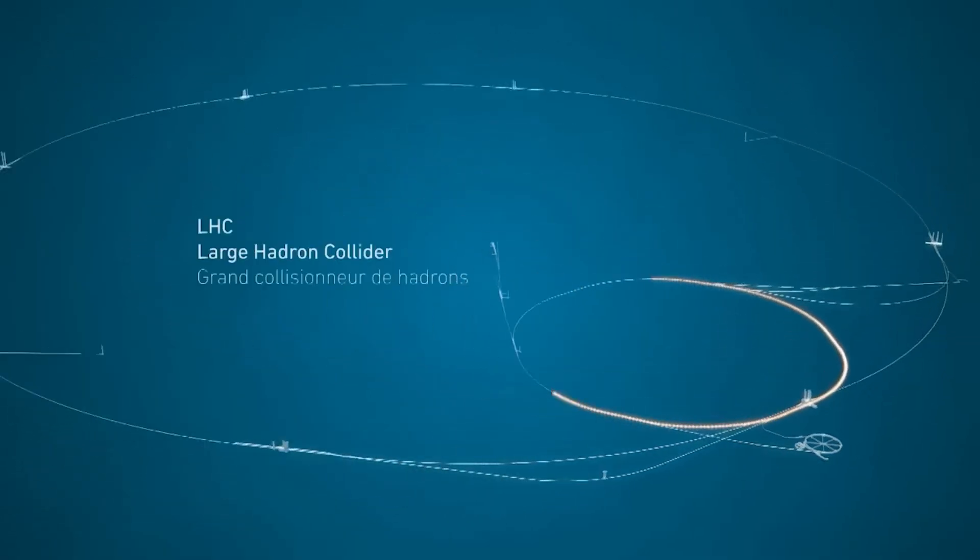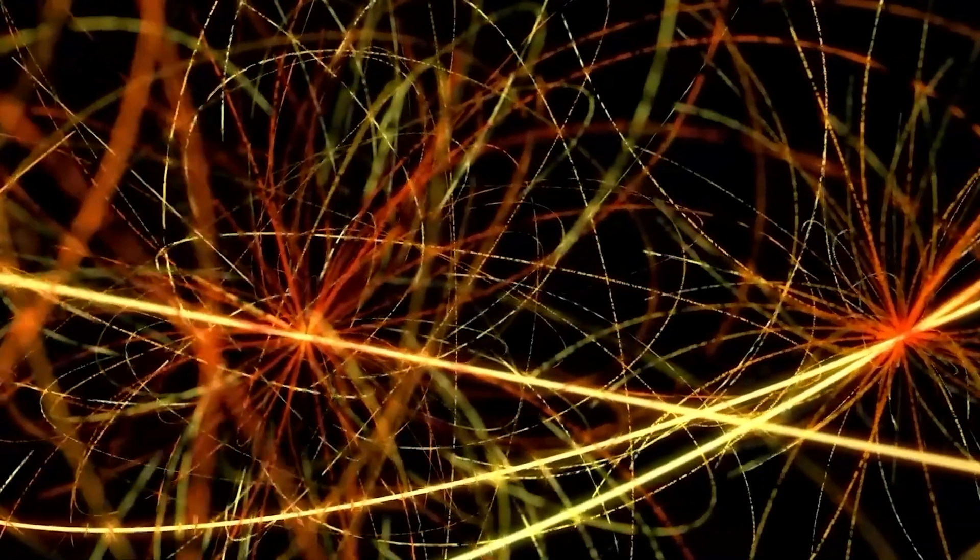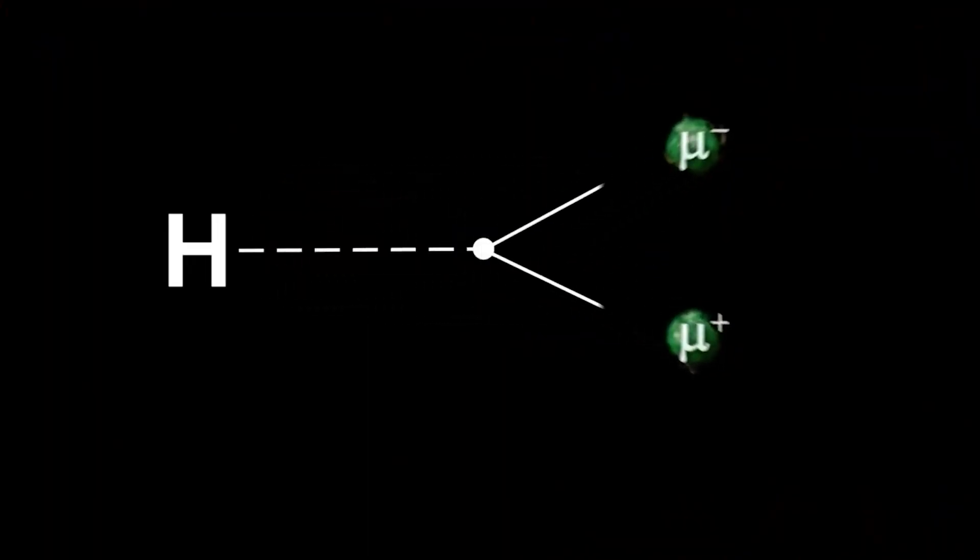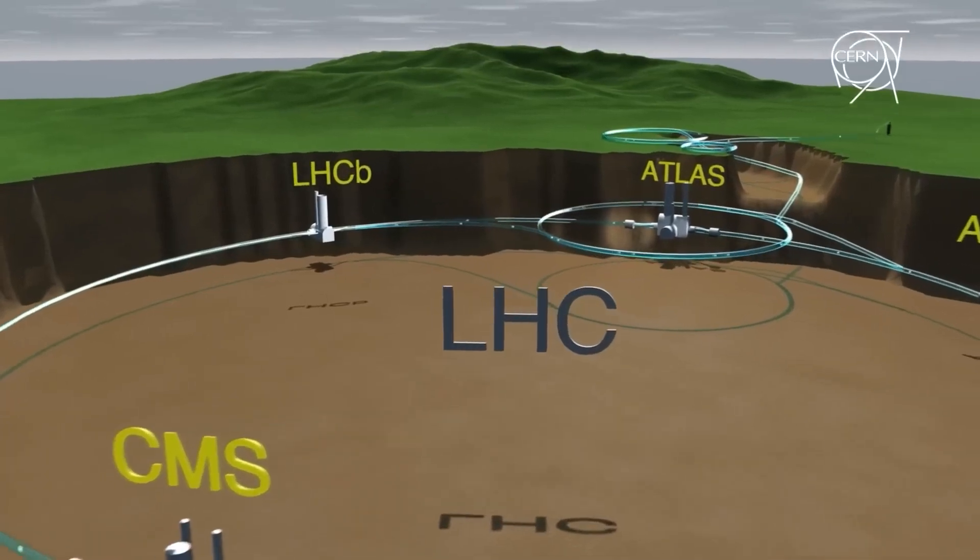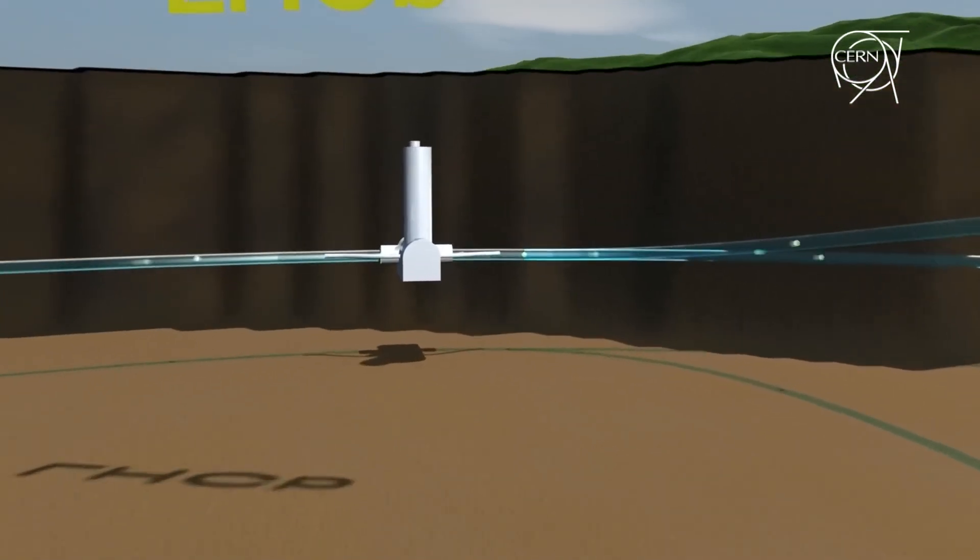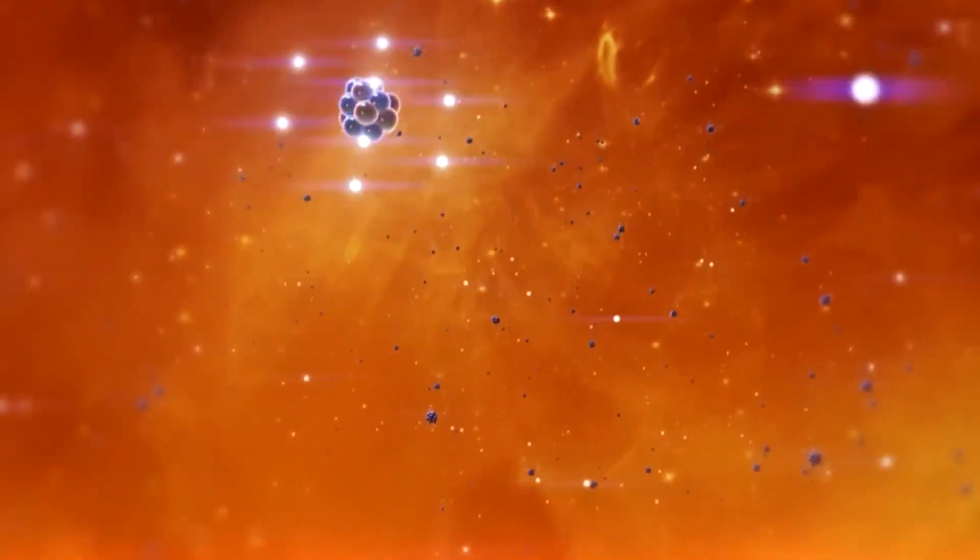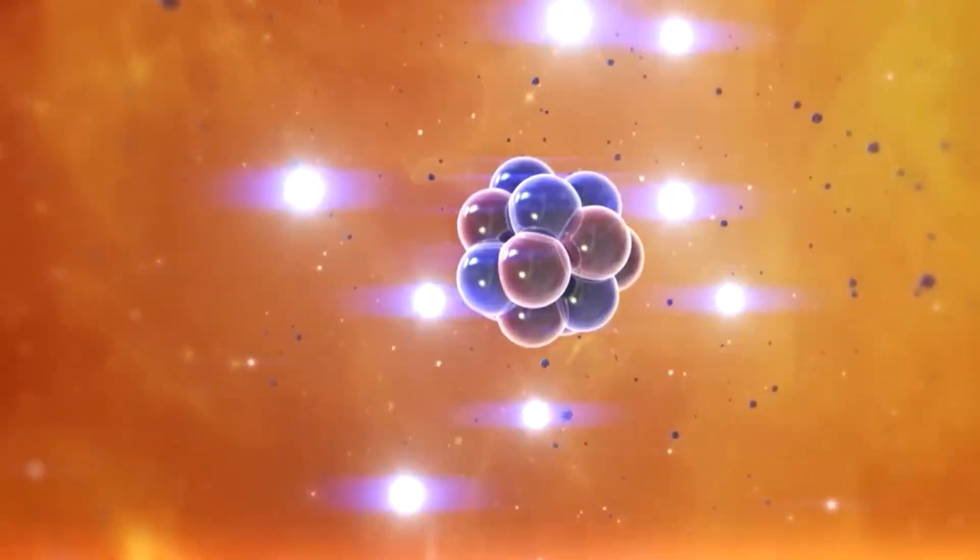A collider is a machine that speeds up small particles and smashes them into each other. These machines are super tricky to build, but in science, they're like super-powered magnifying glasses. They help scientists see things at a really tiny level. Colliders make particles crash together really hard, and when that happens, they break into smaller bits for a super short time. These tiny bits are crucial to study, but they disappear so quickly that colliders are the only way to see them.